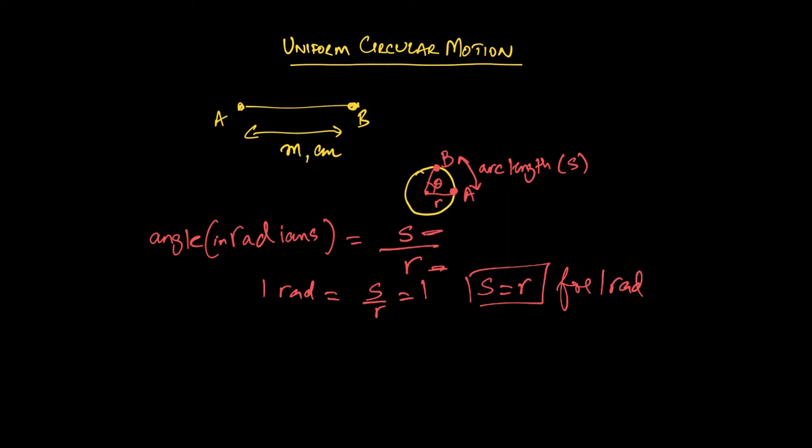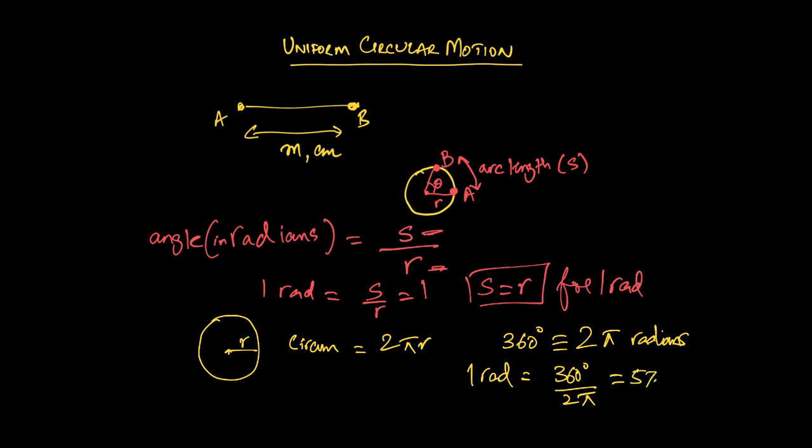So let's just work through a few common angle measures that you are going to encounter in your studies. So what would be the circumference of the circle? Of any circle, really. The circumference is going to be 2πr, right? So very clearly, it should be evident to you that 360 degrees is the same as 2π radians. Or one radian is equal to 360 degrees divided by 2π. And when you work that out, that works out to be 57.3 degrees.